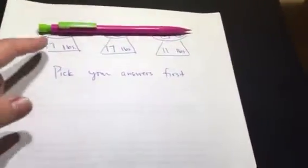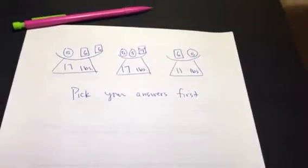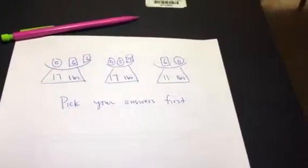The magician says 17, 17, and 11, and you figure out the blanks. So pick your answers first.